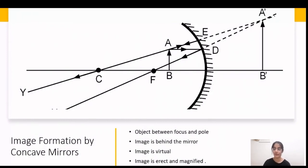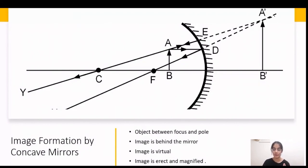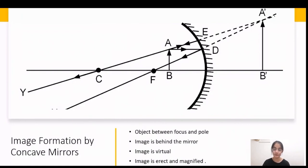To summarize concave mirror image formations: the six positions are — at infinity, beyond center of curvature, at center of curvature, between center of curvature and focus, at focus, and between focus and pole. For the first five positions, the concave mirror produces real images. Only when the object is between the focus and pole does the concave mirror produce a virtual image.